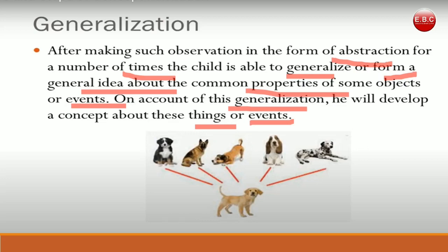When we try to understand commonalities and create bonds based on those commonalities, we form a general idea about a concept. Now not only do we recognize this particular dog, but we also understand that this is also a dog, and this is also a dog — all different types of dogs, irrespective of differences in their color or appearance. The child neglects all dissimilarities and forms an idea about different types of dog based on the similarities they share. This is called generalization.